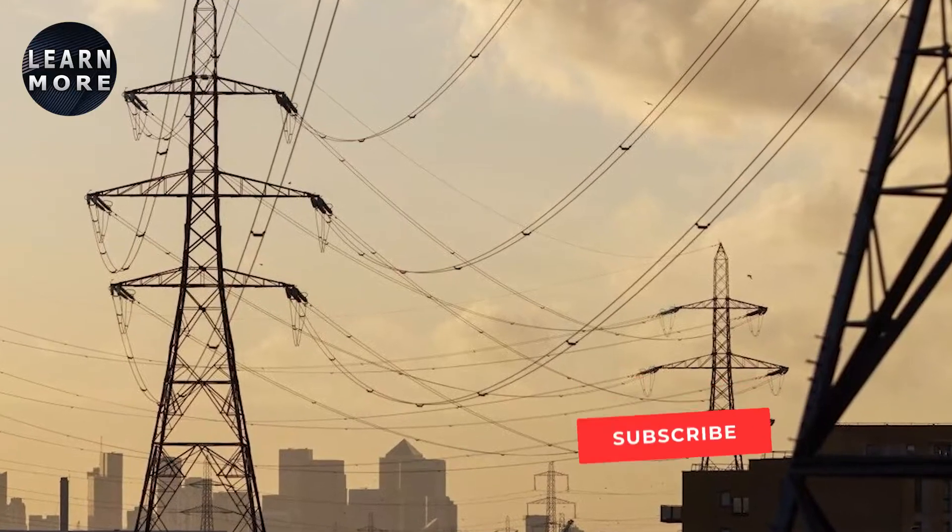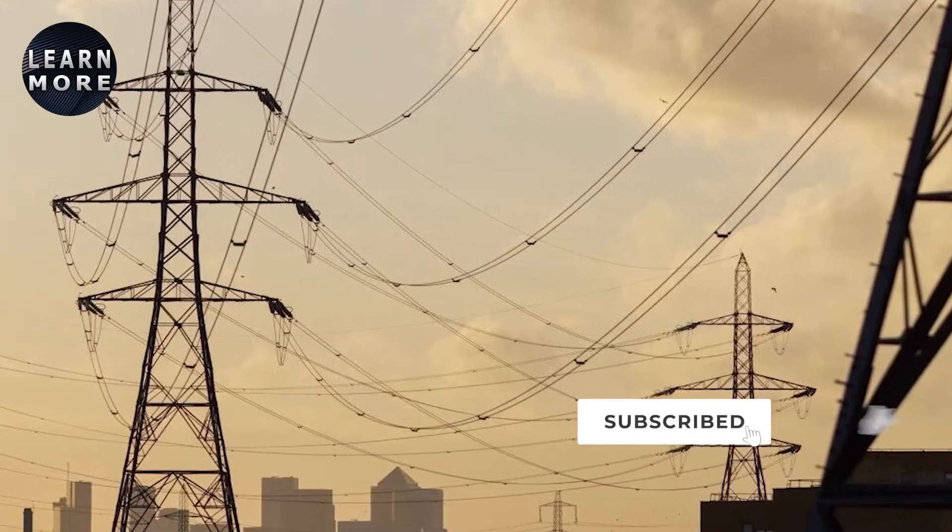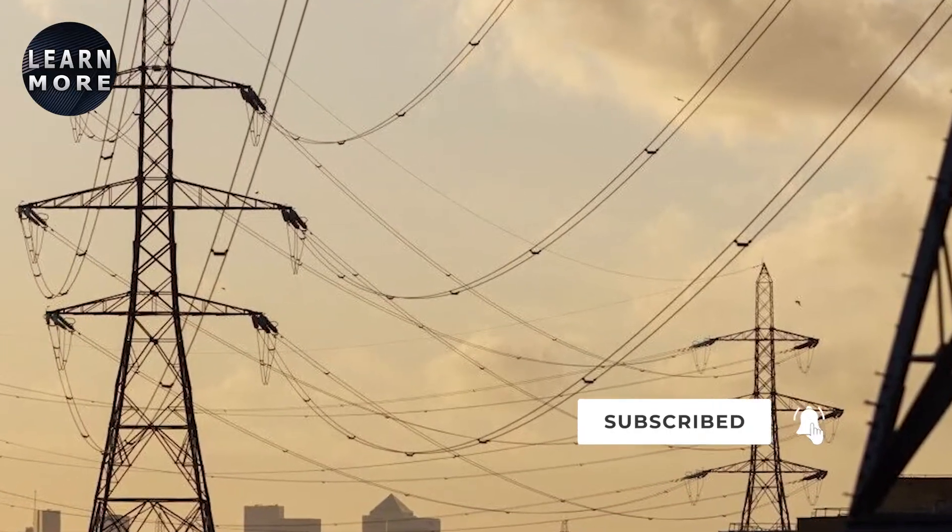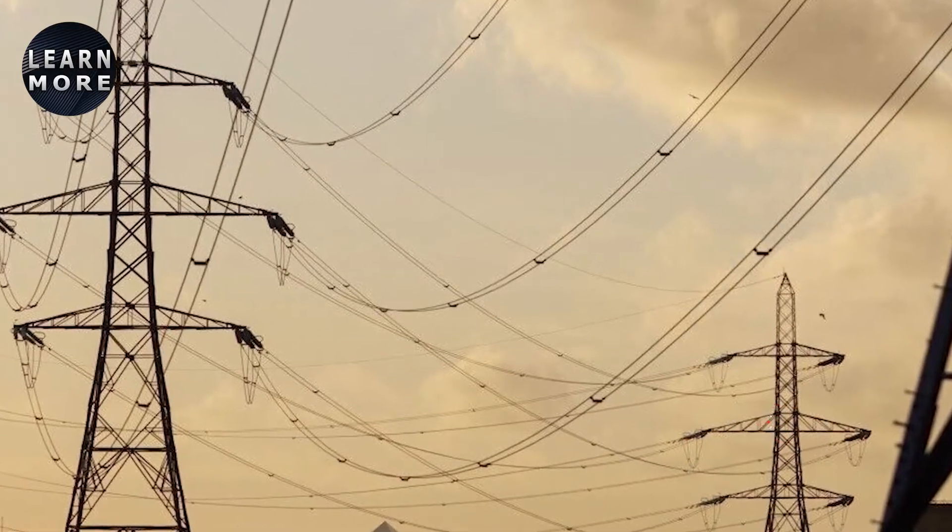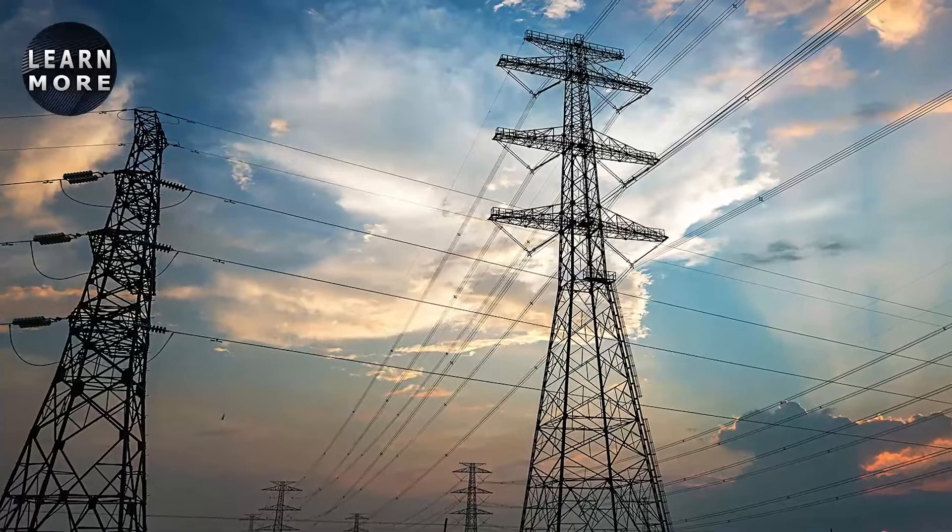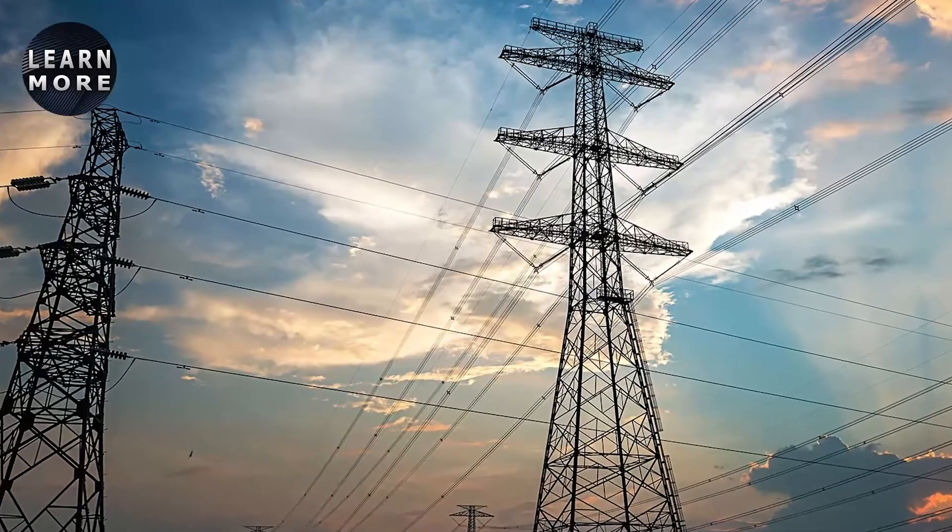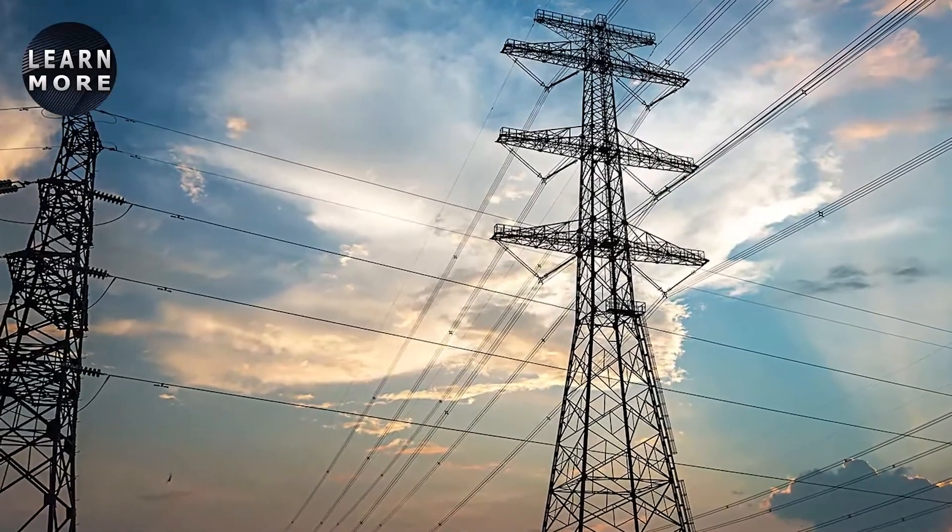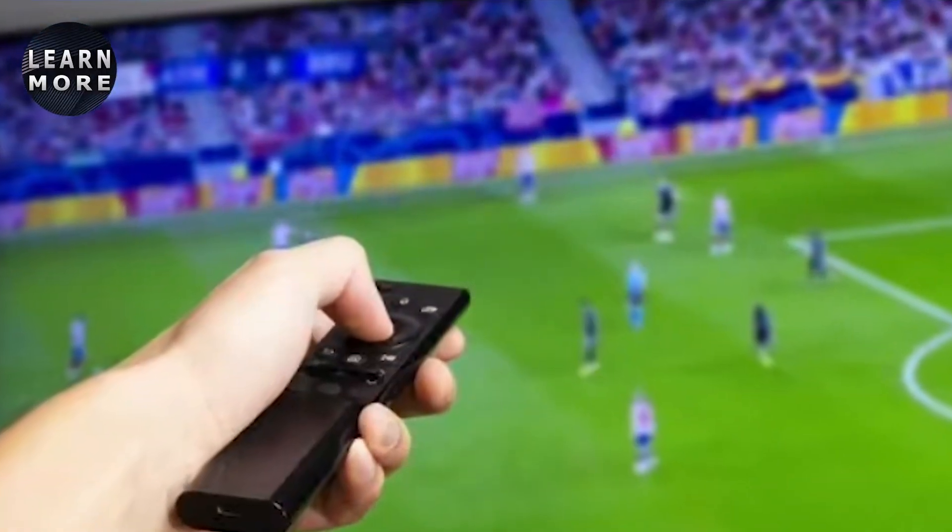The National Grid considered announcing an emergency blackout preventing plan for tomorrow evening that would have seen householders paid to reduce their energy usage. As a result of pressure on the French energy grid, the Electricity Systems Operator (ESO) was considering starting up the so-called Demand Flexibility Service for the first time tomorrow evening.